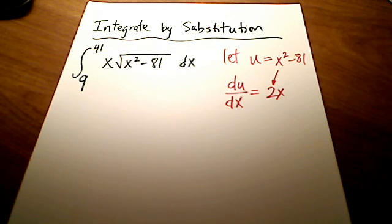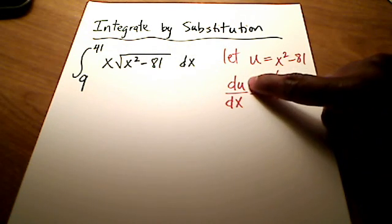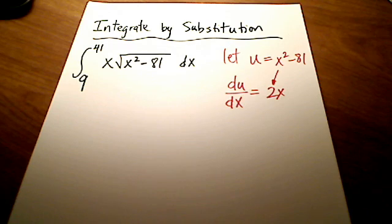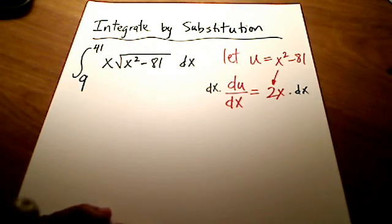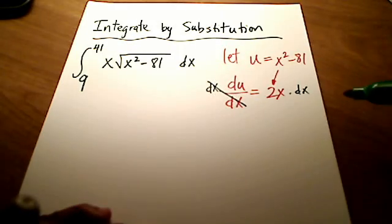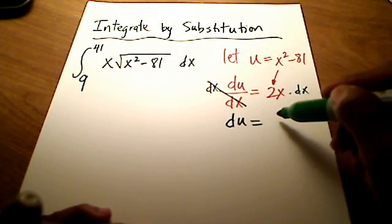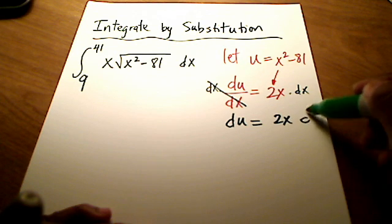Alright, let's do one more thing. Let's get this du up here by itself and so I'm going to multiply both sides by dx. I hope you see. We multiply both sides by dx, these guys cancel out and I'm left with du is equal to 2x dx.